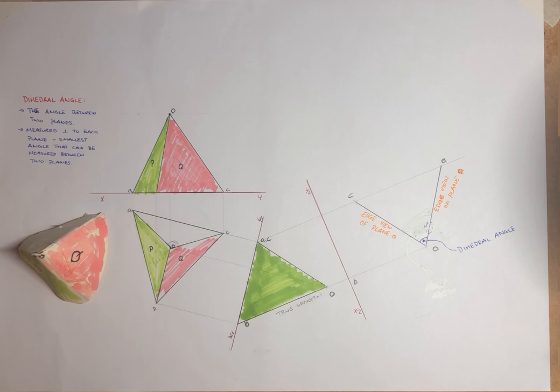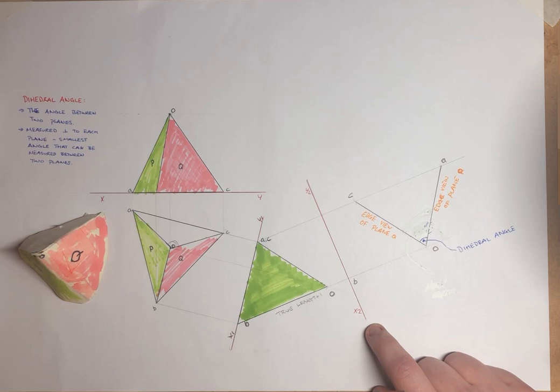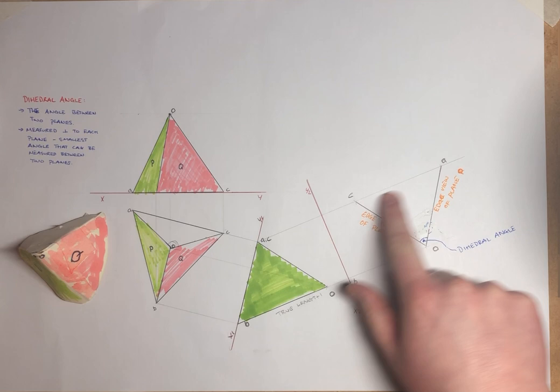So just then to get our dihedral angle, we're going to extend this line, our true length line, up to our second auxiliary. So we're going to form our X2, Y2 line, which is perpendicular to this line. Then extend our point AC up as well, parallel to our true length line.